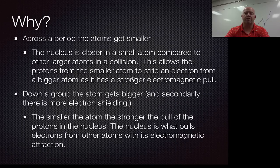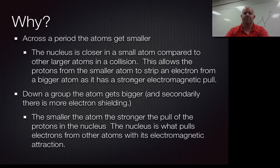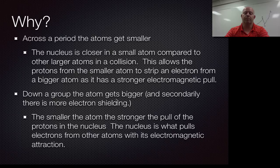All right, so here's your reason why. Going across a period, the atoms get smaller. Again, it's all about size. So the nucleus is closer to the small atom compared to other large atoms. This allows the protons from the smaller atom to strip the electrons from the bigger atom because of its stronger electromagnetic pull. Going down the group, they get bigger, and secondarily,